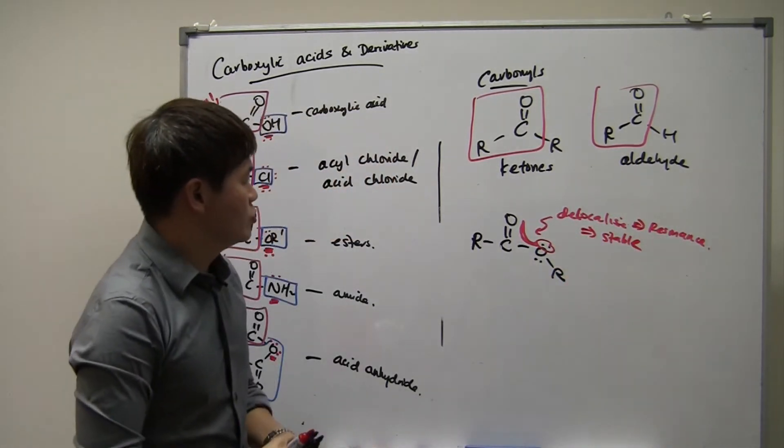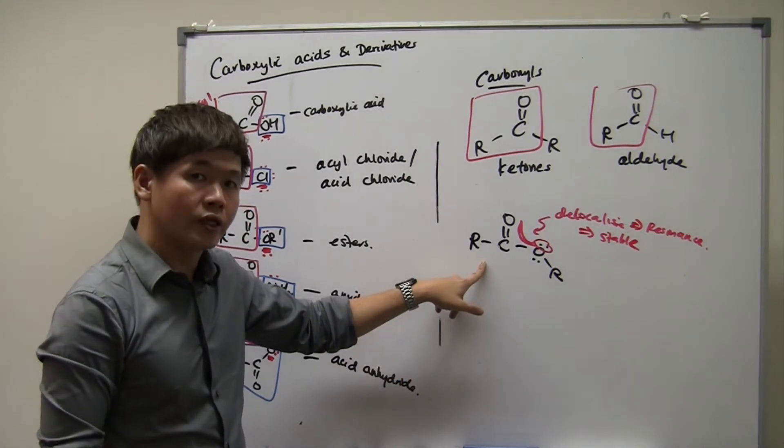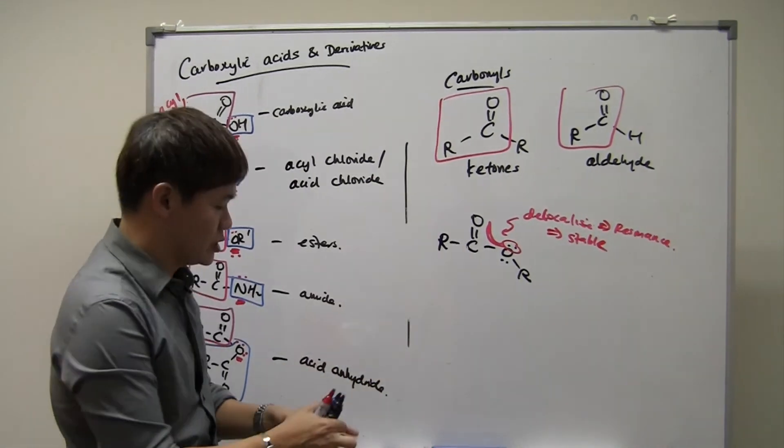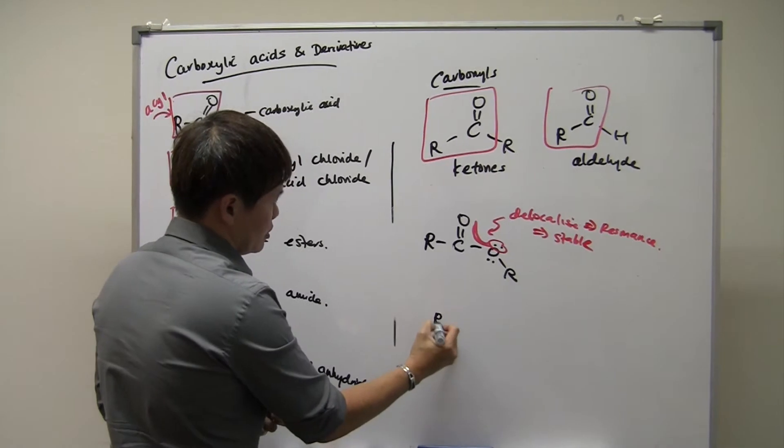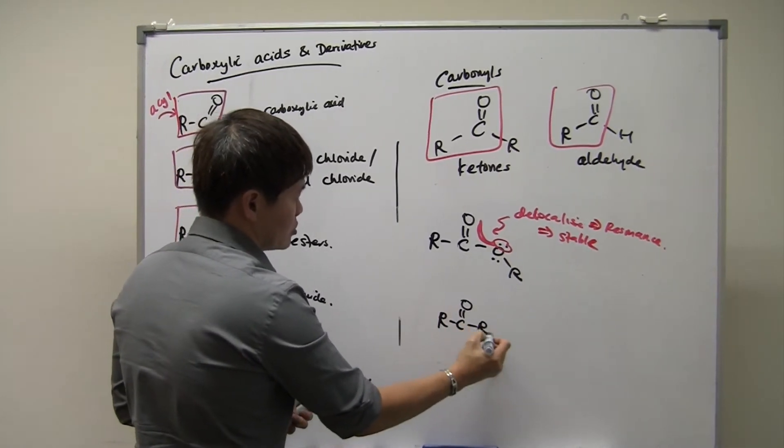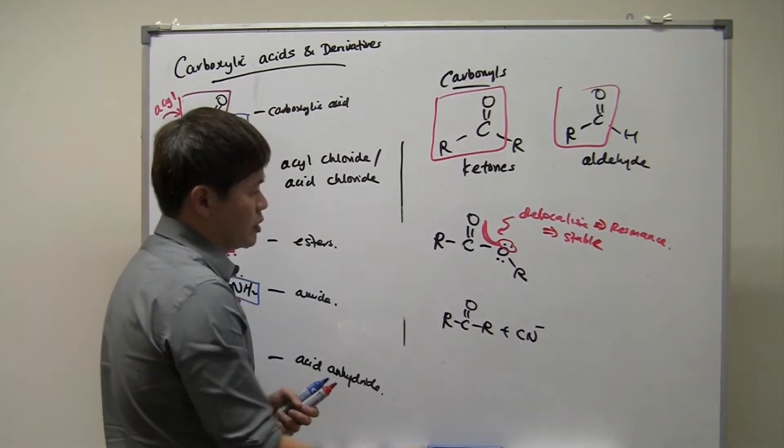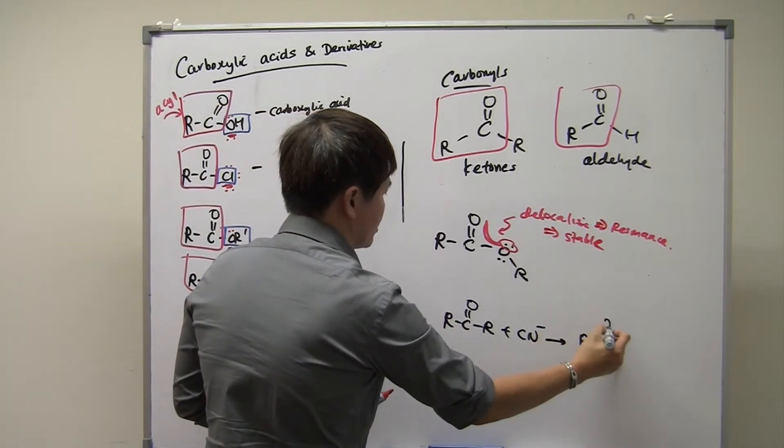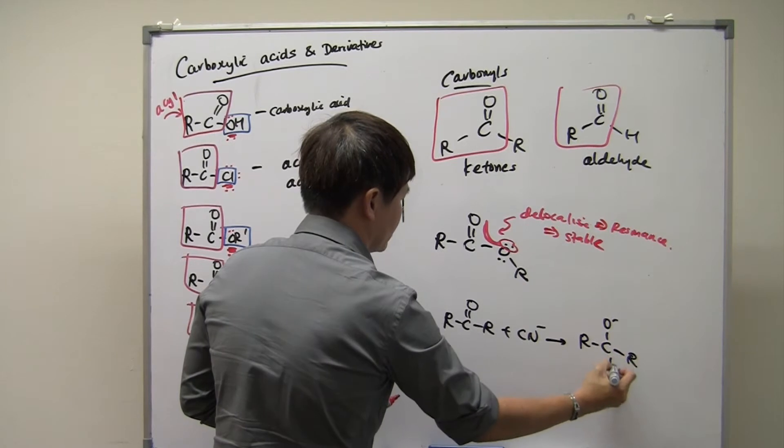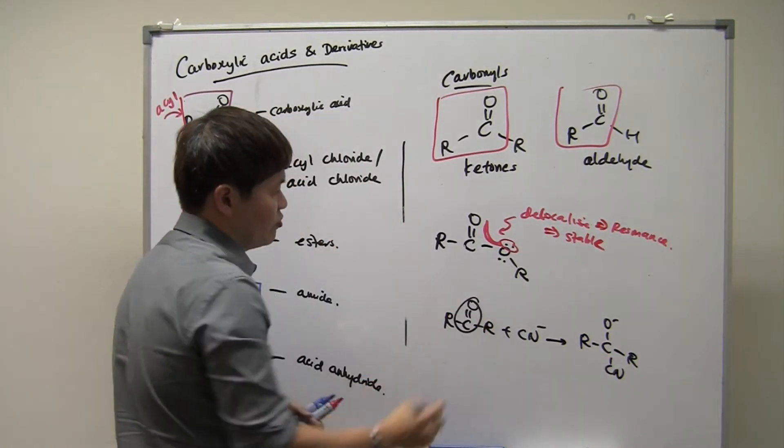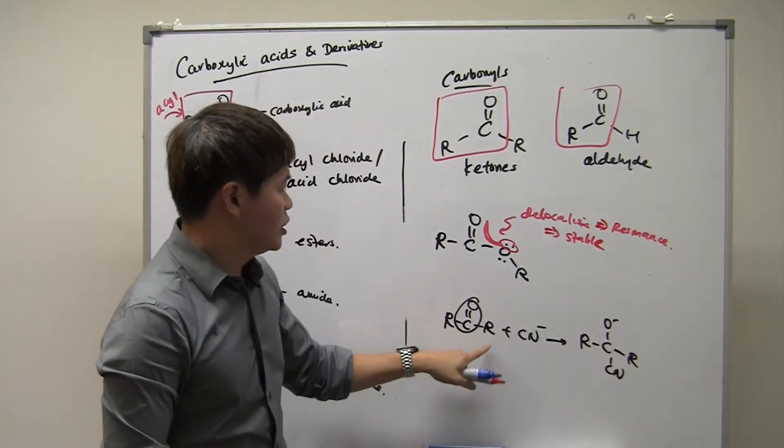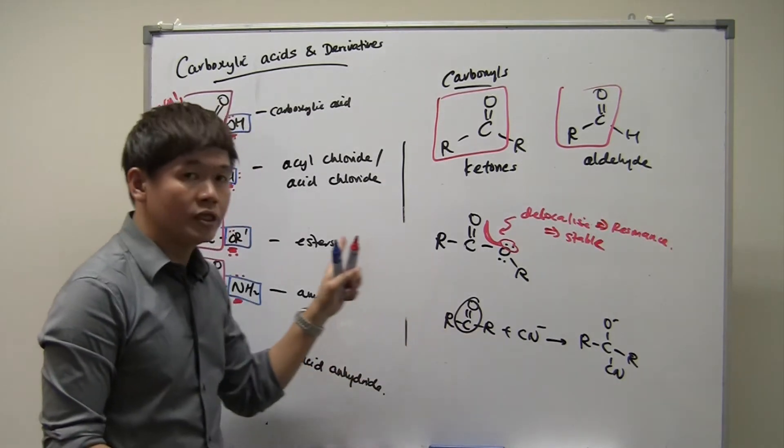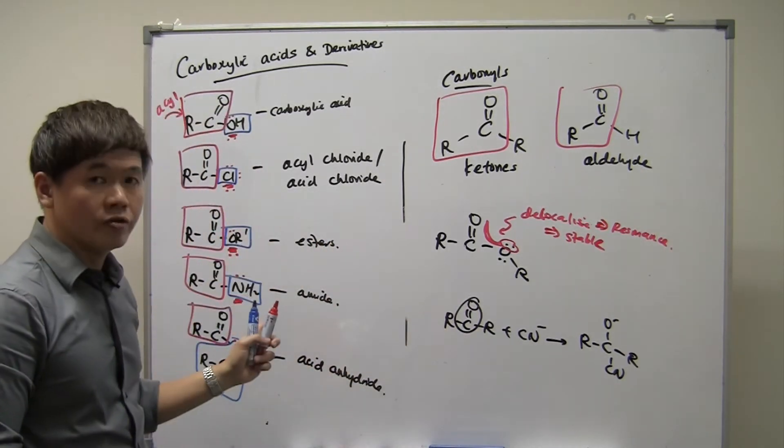And therefore, you notice that the acids and derivatives don't undergo addition reactions. Because if we undergo addition reactions like what the carbonyls do, we notice the chapter of carbonyls, we learned about this reaction before. That the nucleophile can be a cyanide. And basically, this can be a product of a reaction. The double bond disappears. It forms four single bonds. This addition reaction cannot happen for these compounds. They undergo substitution reactions instead.